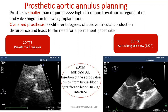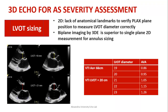Using 2D transthoracic echocardiography in the parasternal long-axis view, or 2D TEE in the aortic long-axis view at approximately 120 degrees, we zoom, get a mid-systolic frame, pick up the insertion of the right coronary cusp and go 90 degrees to obtain a good LVOT diameter. For 3D echo LVOT sizing, it is superior to uniplane 2D measurements. Importantly, just a 2 mm increase in LVOT diameter can reclassify aortic valve stenosis from severe to moderate, changing the clinical decision.